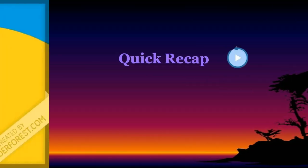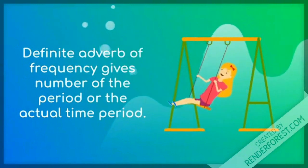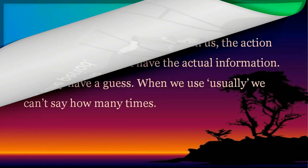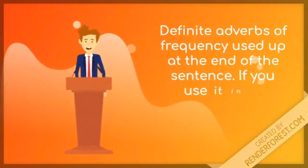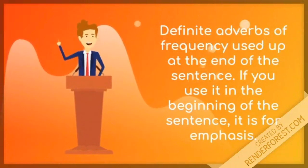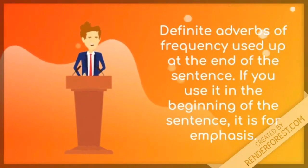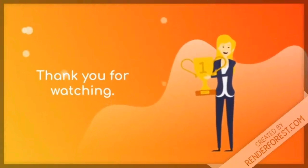Quick recap: a definite adverb of frequency gives the number of times or the actual time period. Indefinite adverbs of frequency tell us an action is repeated, but we don't have the exact information — only an approximation. When we use 'usually,' we can't say exactly how many times. Definite adverbs of frequency are used at the end of the sentence; if used at the beginning, it is for emphasis. Thank you for watching.